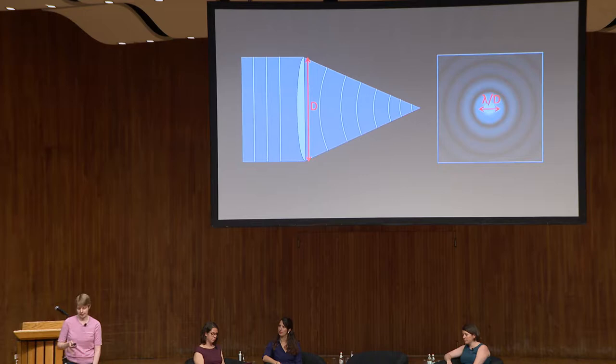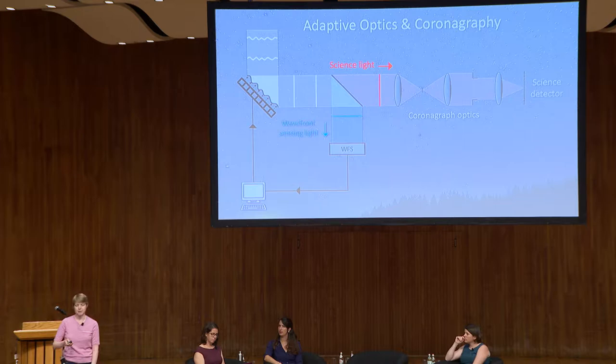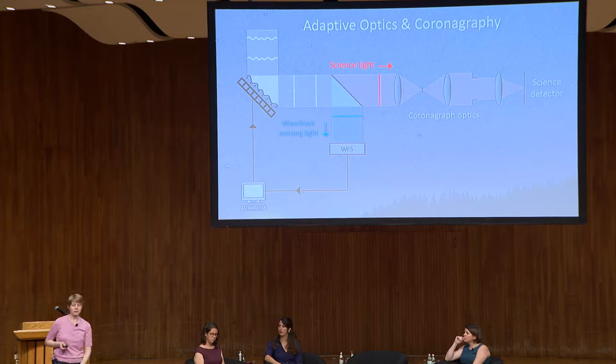For ground-based telescopes, wave fronts encounter pockets of air in the Earth's atmosphere with different temperatures, causing wave fronts to become aberrated or distorted — and those distortions change on millisecond time scales. In space, optical imperfections in mirrors and lenses, plus pointing jitter and thermal variations, still require wavefront control. We do that using adaptive optics systems with a deformable mirror that may have hundreds or thousands of actuators to control the shape and flatten out the wave front.